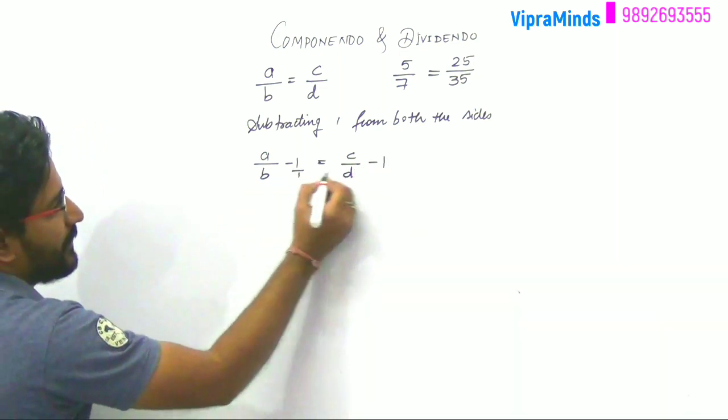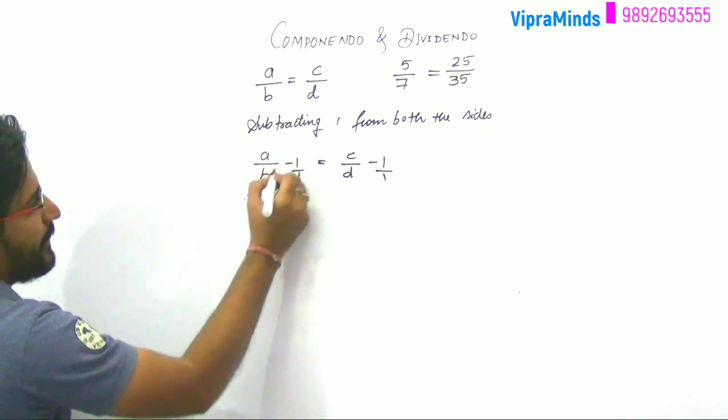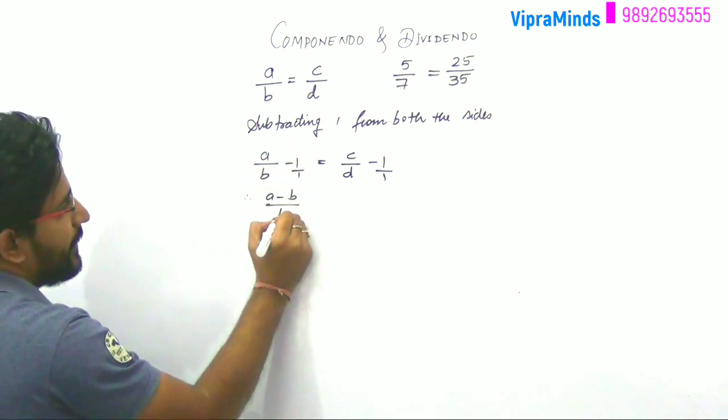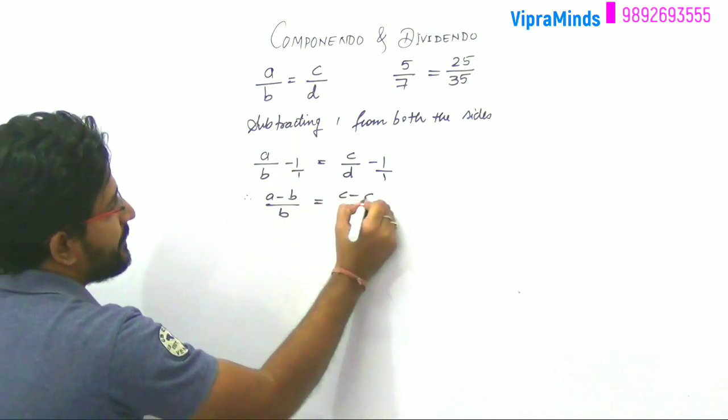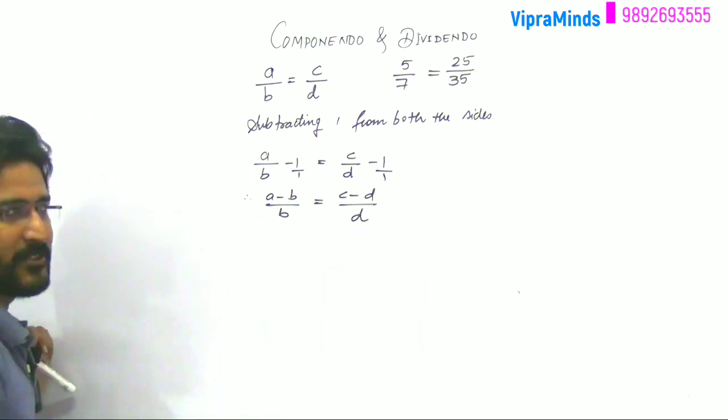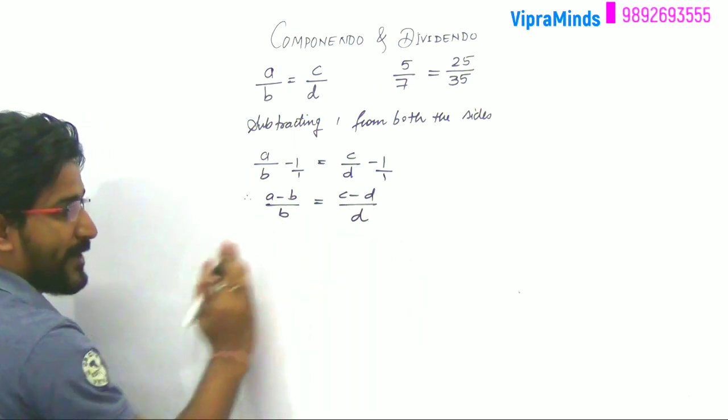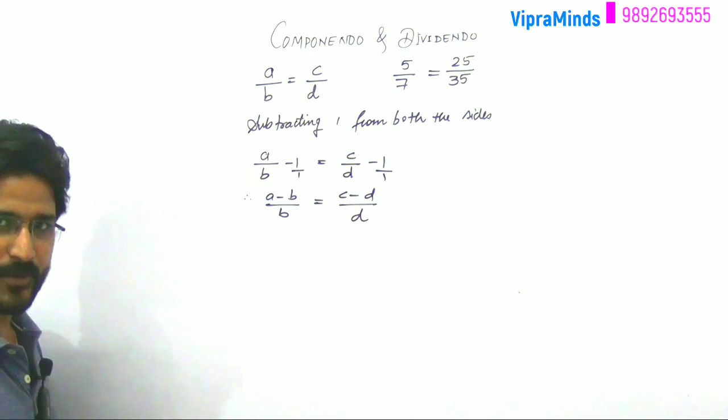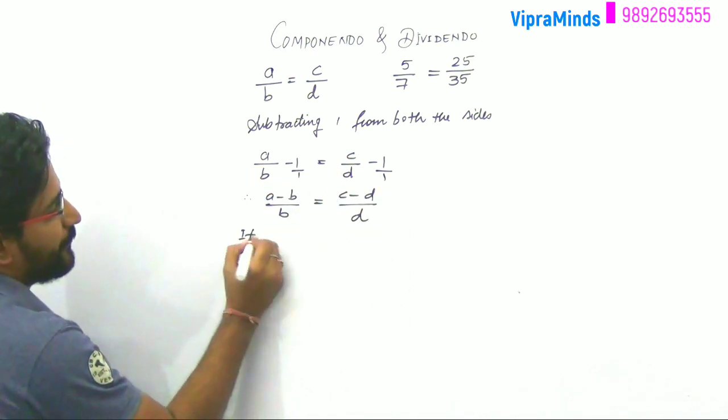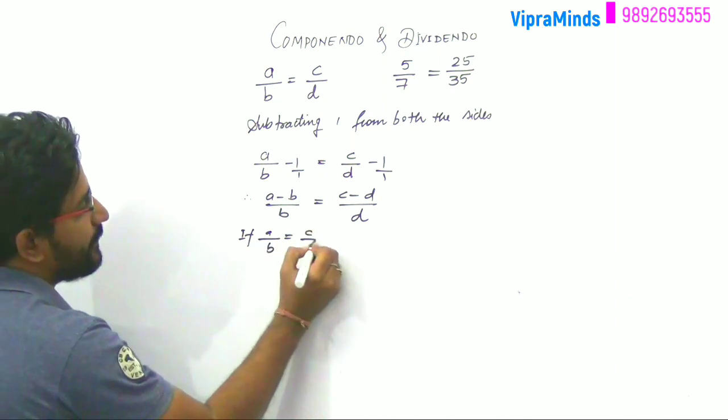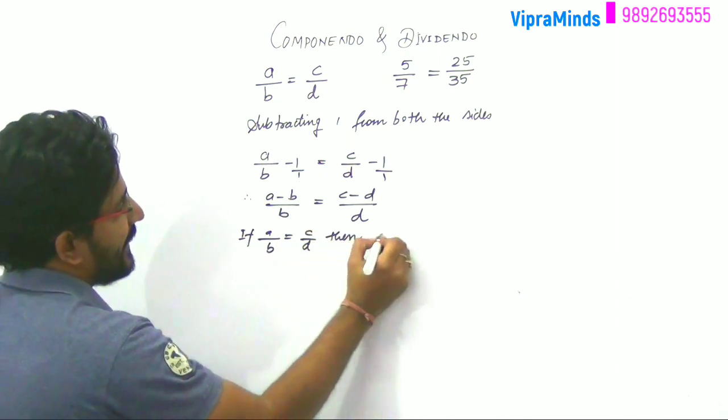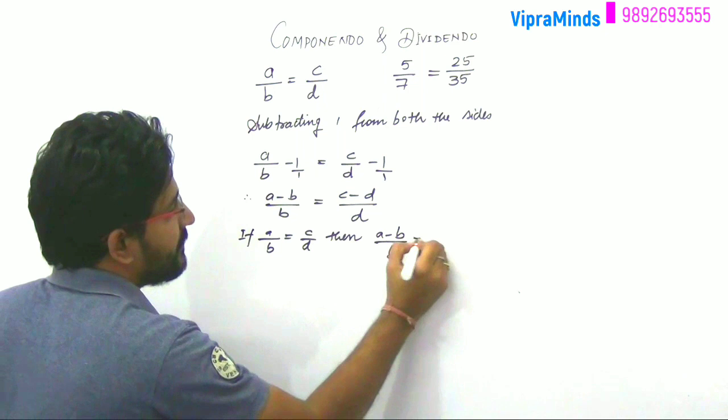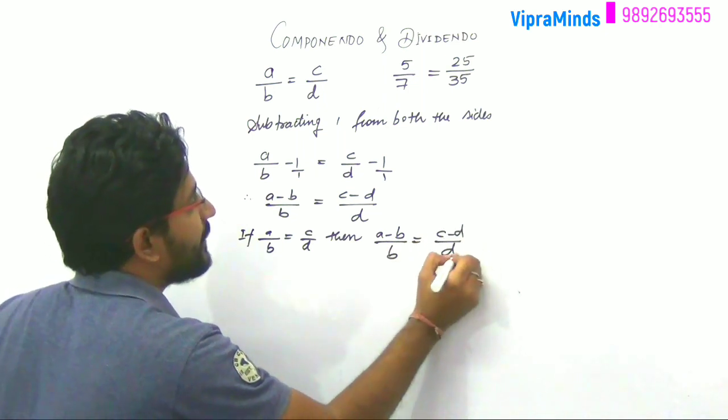So again, this is 1 by 1, this is 1 by 1. Cross multiply करेंगे, to a minus b by b हो जाएगा, equals to c minus d by d. Again we are getting two ratios and both ratios are equal. जहां पर हमने यहां दोनो साइड माइनस वन किया. That means what? If you are getting a by b equals c by d, then you can also say that a minus b by b will be equals to c minus d by d.